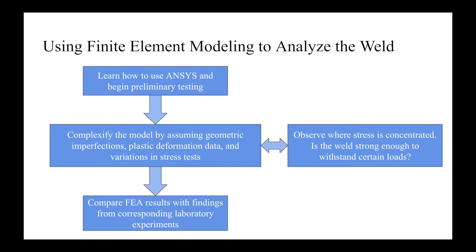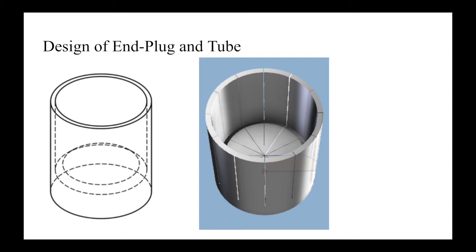Here is the schematic of my project layout. I used ANSYS to conduct multiple types of stress tests on the weld. As I learned more about the capabilities of this finite element analysis program, I increased the complexity of the model by simulating geometric imperfections and plasticity. The first thing I did was design the end plugs and cladding in a CAD program, as shown on this slide. To prepare the model for testing in ANSYS, I cut the tube radially into 12 separate pieces that form structures called petals, shown in the picture to the right.